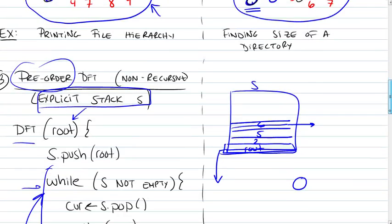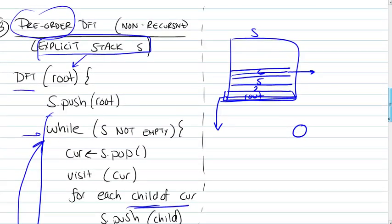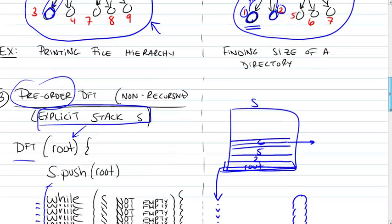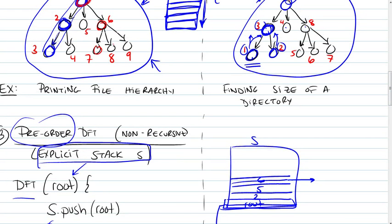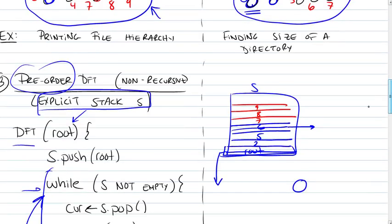And we're going to keep on doing this. So 6, once we visited 6, we will push its children onto the stack. So we will push 7, 8, and 9 onto the stack. 7, 8, and 9.